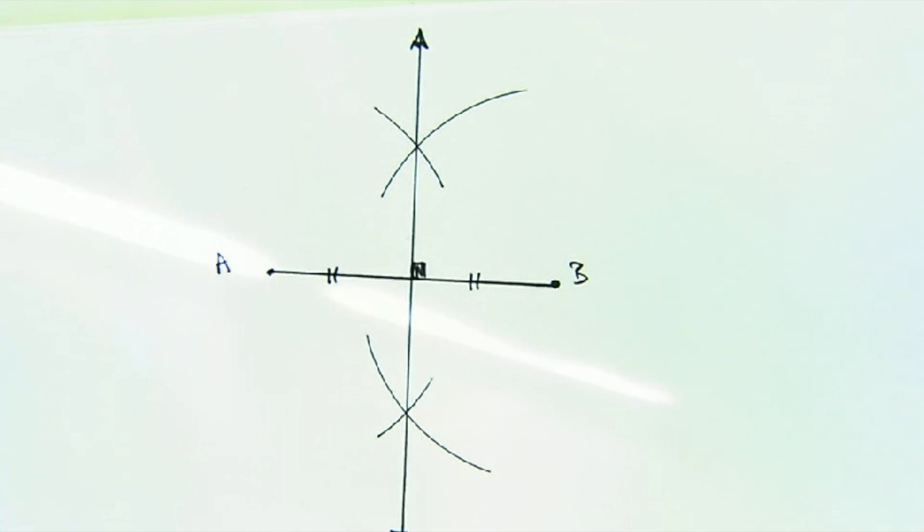Now, you can believe me or not believe me, but I think you need a little reasoning behind the scenes here. Why did this work? Why did this cut it in half and is it perpendicular?